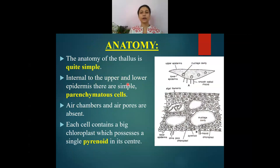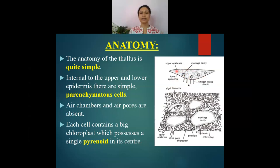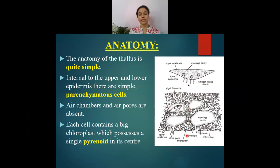Anatomically, a section through the Anthoceros thallus shows it is very simple, unlike that of Marchantia. It is differentiated into two regions: the upper epidermis and the lower epidermal tissue. Between these, simple parenchyma cells are present which also include air chambers and air pores. However, these air chambers and air pores are absent on the upper epidermis of the Anthoceros plant body. Each cell contains a large chloroplast with a single pyrenoid at its center; these pyrenoids are the centers of carbon dioxide fixation.